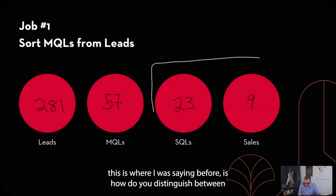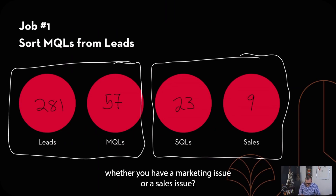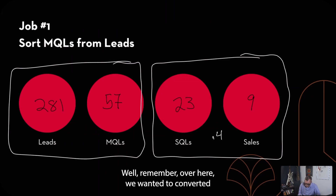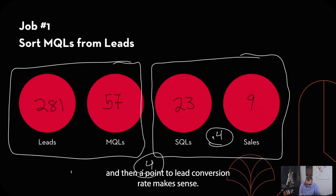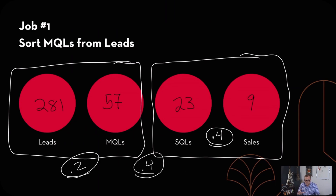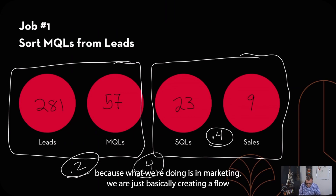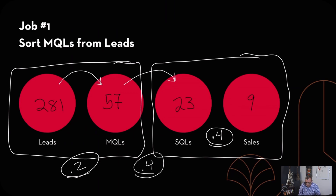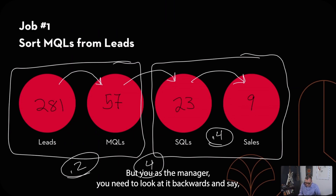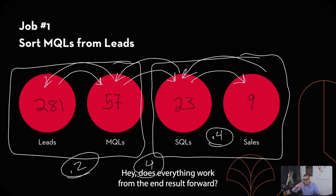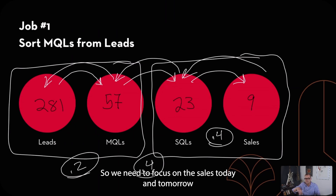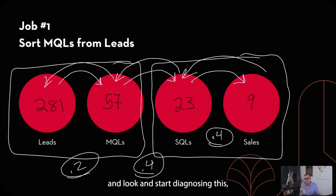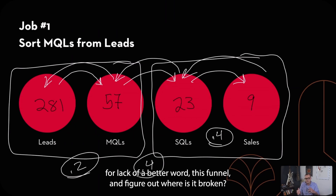If we look at this, this is where I was saying: how do you distinguish between whether you have a marketing issue or a sales issue? We wanted to convert at a 40% sales closing rate, a 40% marketing conversion rate, and a 20% lead conversion rate. In marketing, we're creating a flow that proceeds forward. But as the manager, you need to look at it backwards and diagnose this funnel to figure out where it's broken.